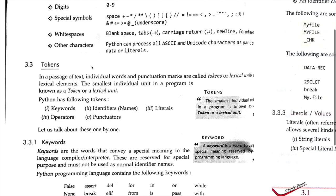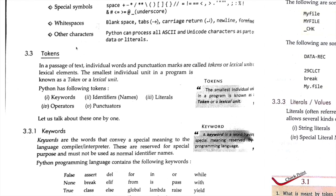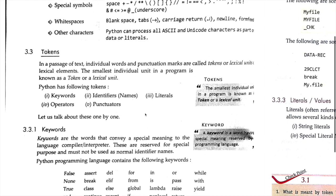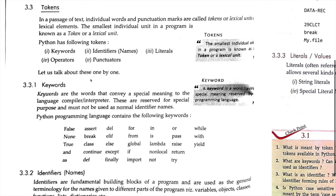Now let's talk about tokens. A token is the smallest individual unit in a program — that is its definition, useful if it comes in your exam. Tokens include keywords, identifiers, literals, operators, and punctuators. We will be talking about all of these in detail.